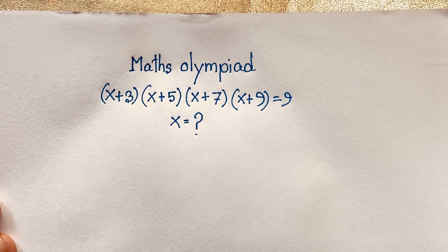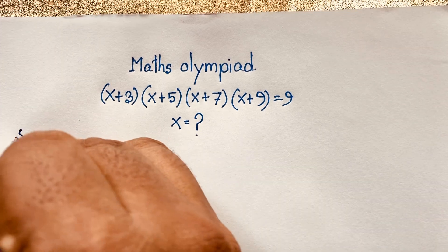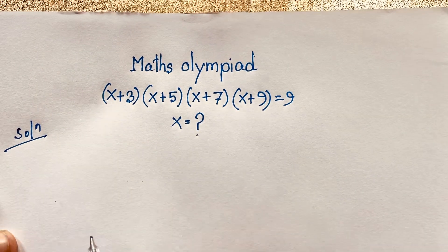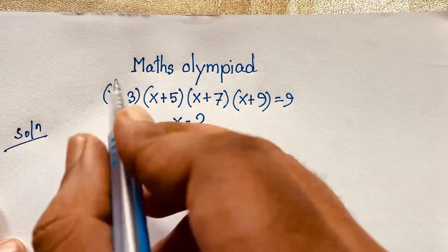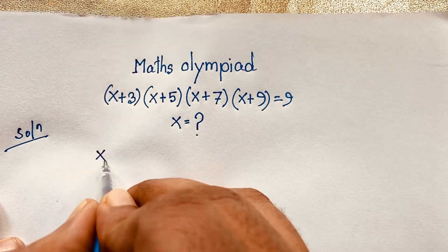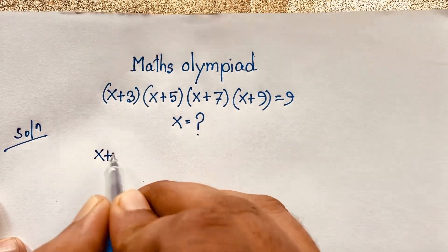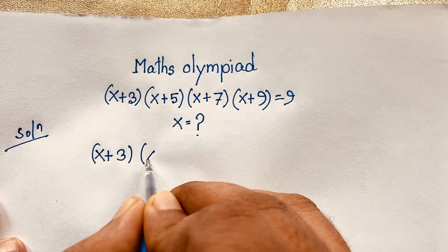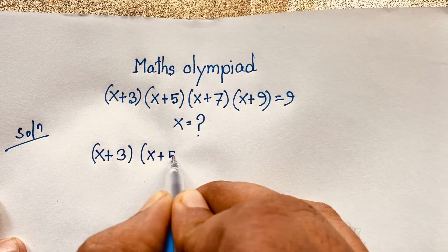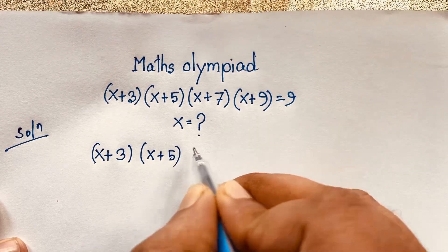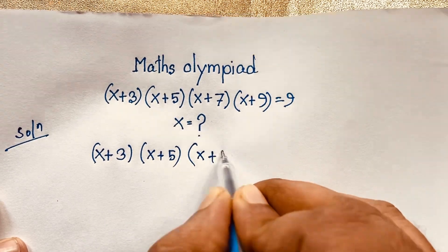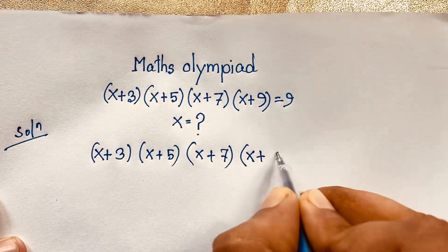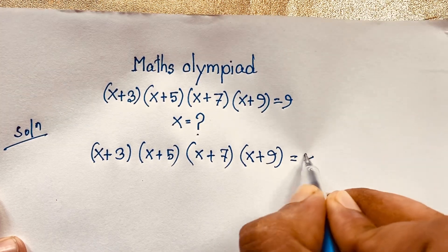I solved this question using an easy method — this is our math solution. Our question is (x+3) times (x+5) times (x+7) times (x+9) is equal to 9.